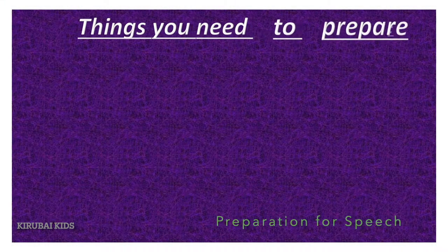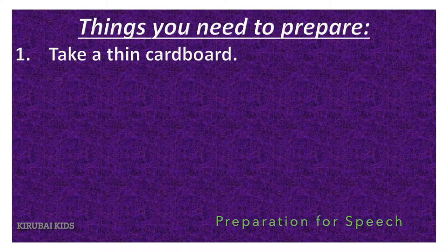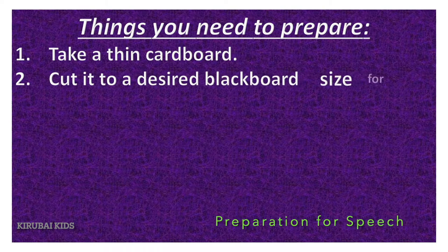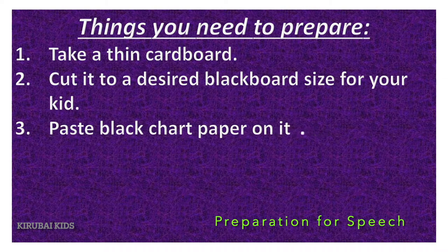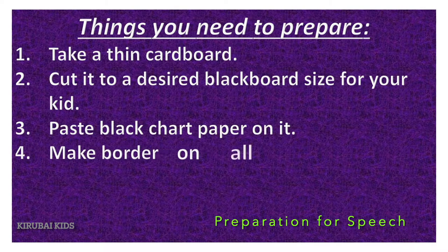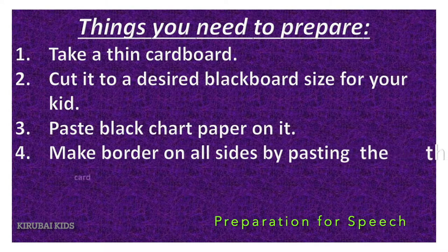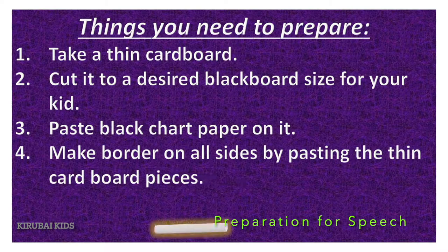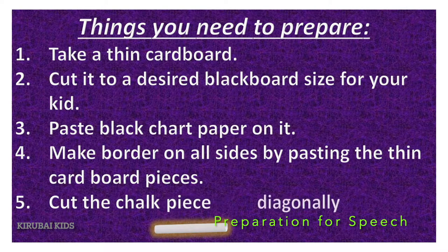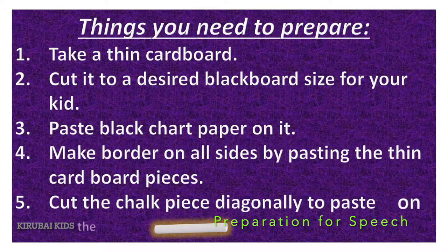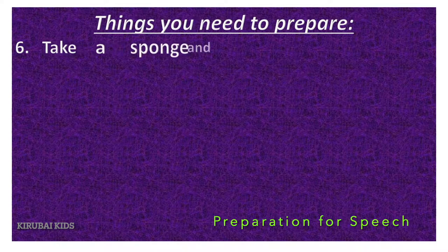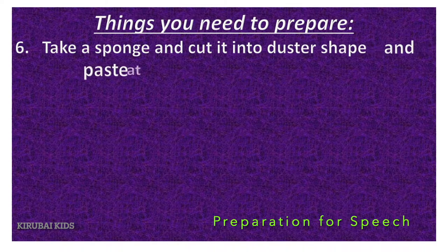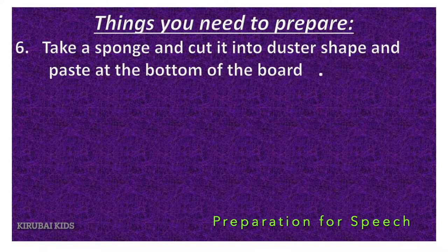Things you need to prepare. Take a thin cardboard and cut it to a desired blackboard size for your kid. Paste black chalk paper on it. Make a border on all sides by pasting thin cardboard pieces. Cut the chalk piece diagonally to paste on the board.